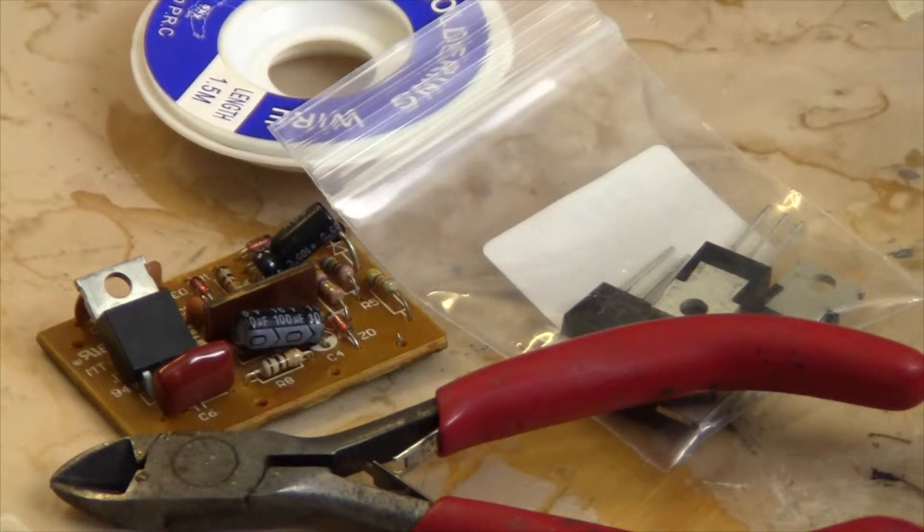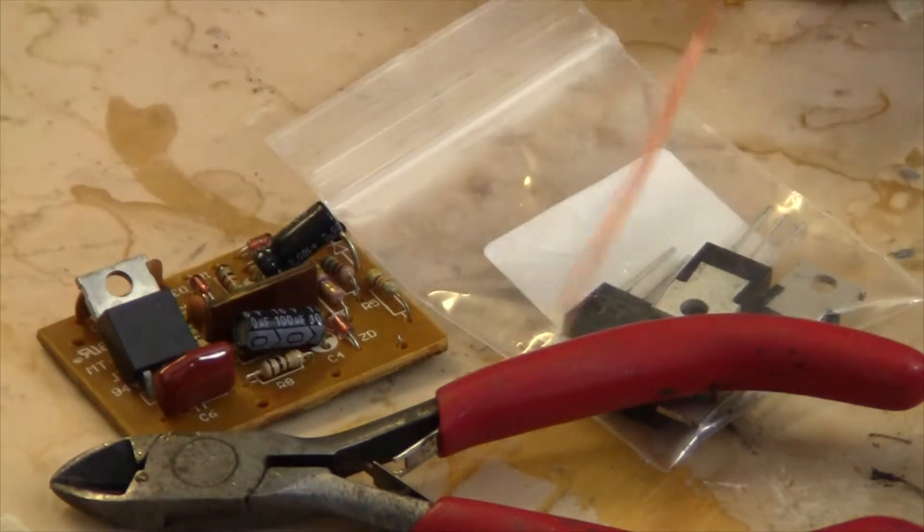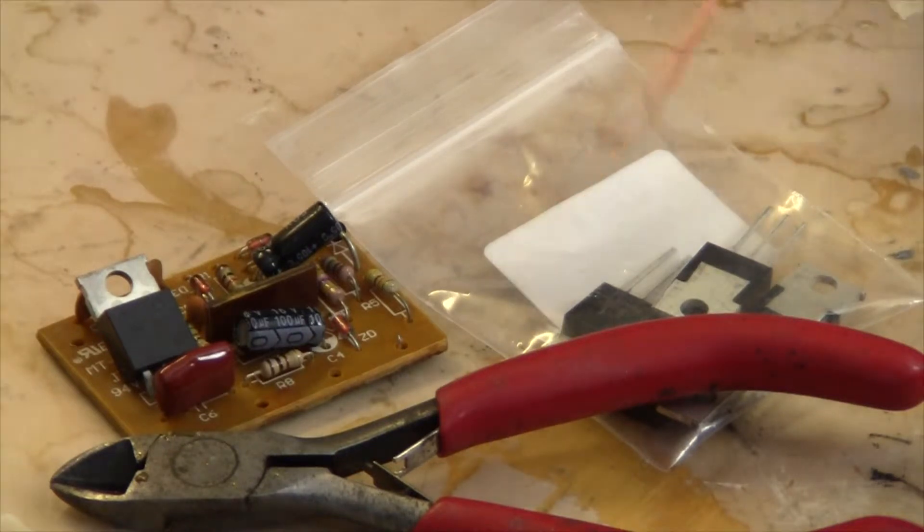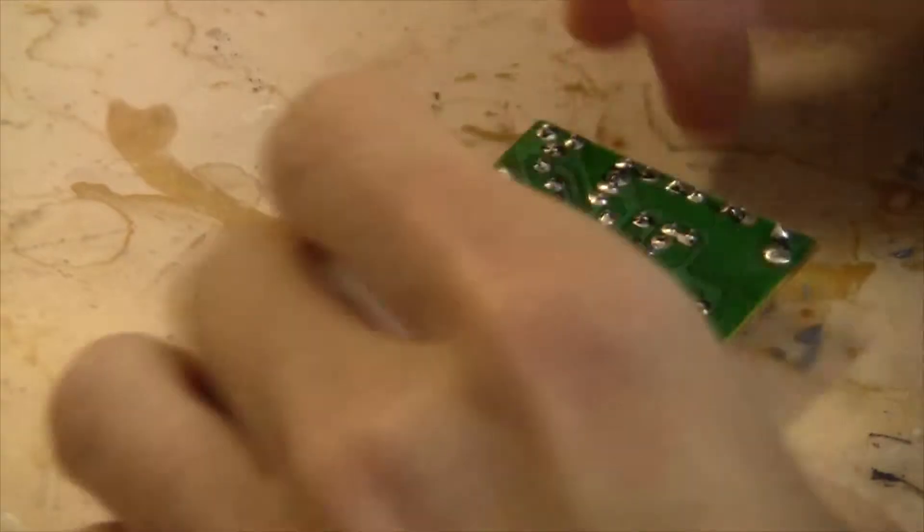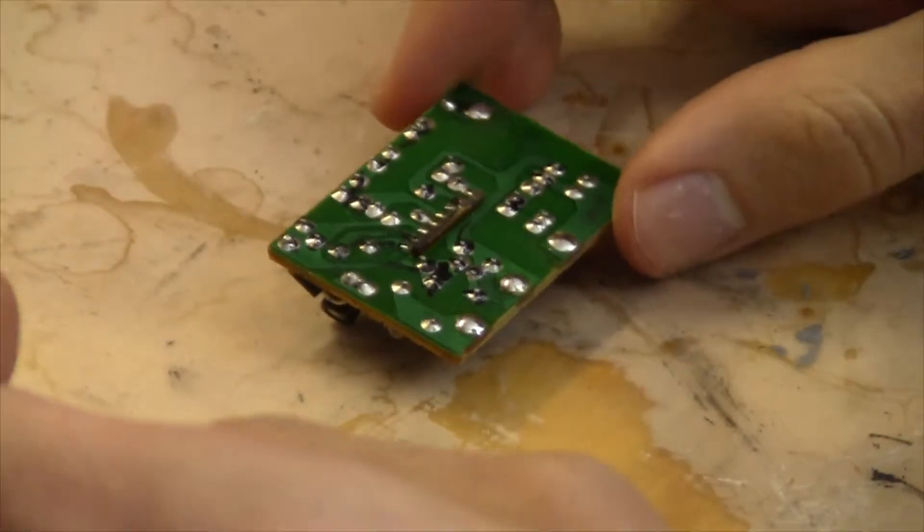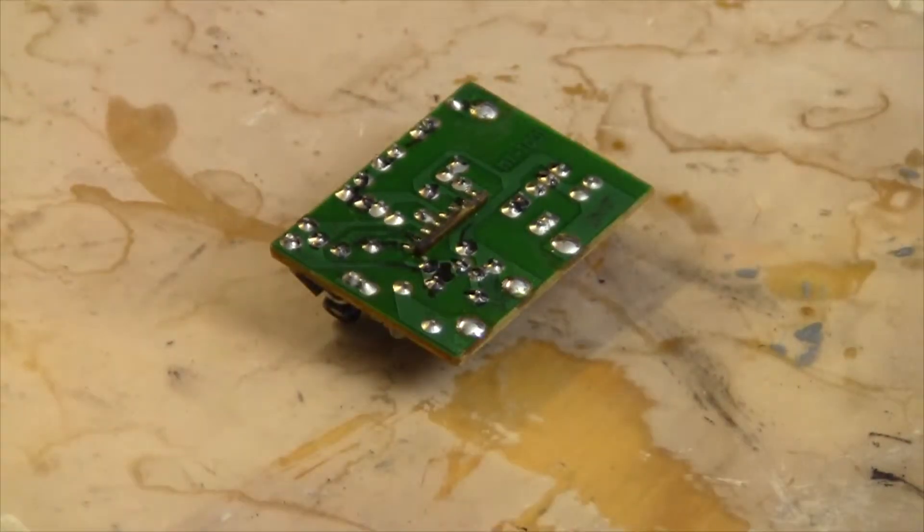So I just took some desoldering wick, a side cutter, and the circuit board. And the desoldering braid is a little bit narrow for what I'm going to use it for, but it'll be okay. I'll just have to slide it a little bit.